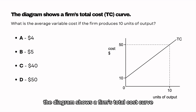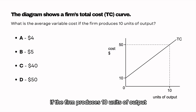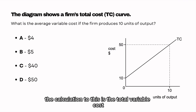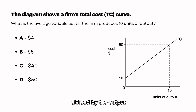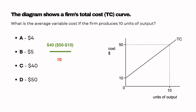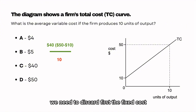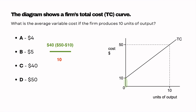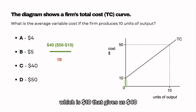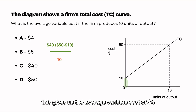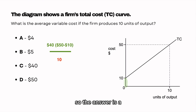The diagram shows the firm's total cost curve. What is the average variable cost if the firm produces 10 units of output? The calculation is total variable cost divided by output. To find the total variable cost, we discard the fixed cost, which is $10. Taking total cost of $50 minus fixed cost of $10 gives us $40. Dividing by the 10 units of output gives us an average variable cost of $4. So the answer is A.